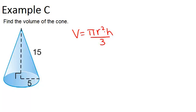In this case, we're given that the radius is 5, so that's our r, and we're given the slant height, l, equals 15.